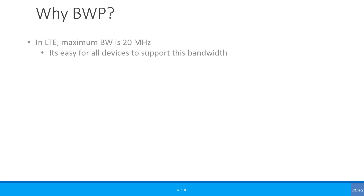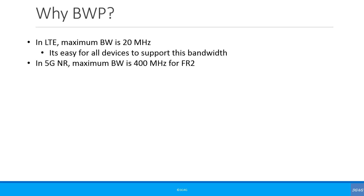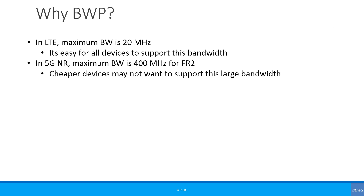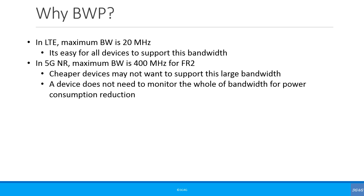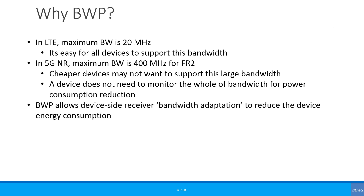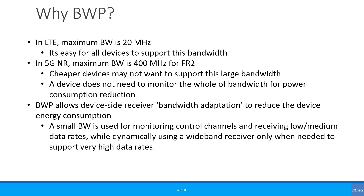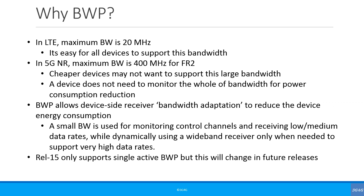So why bandwidth part? In LTE the maximum bandwidth is 20 MHz, so it's easy for all devices to support this bandwidth. In 5G New Radio, the maximum bandwidth is 400 MHz for FR2. Cheaper devices may not want to support this large bandwidth, and a device does not need to monitor the whole bandwidth. For power consumption reduction, bandwidth part allows device-side receiver bandwidth adaptation. A small bandwidth is used for monitoring channels and receiving low or medium data rates, while dynamically using a wideband receiver only when needed for very high data rates. Release 15 only supports single active bandwidth parts, but this will likely change in future releases.